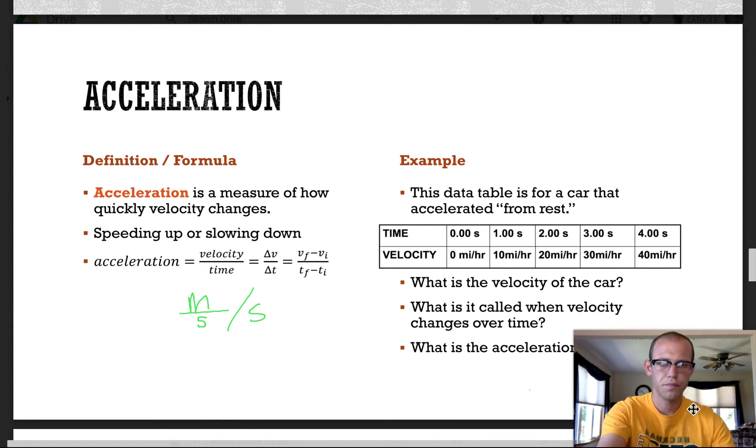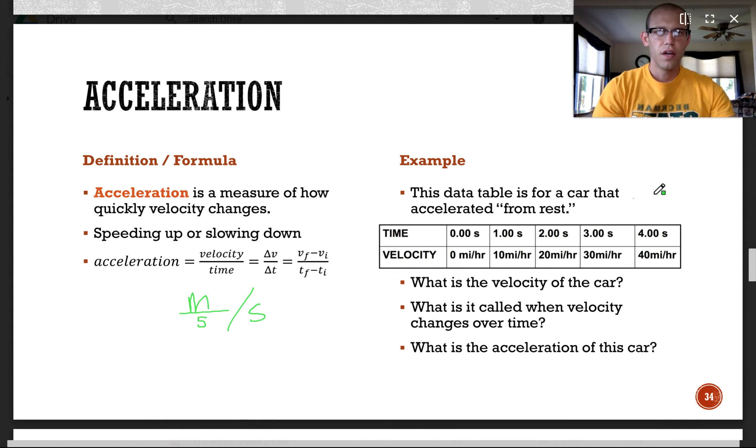So first, the data table below is for a car that accelerated from rest. So what is the velocity of the car? So the velocity I see at time one is 10 miles an hour. At time two seconds, it's 20 miles an hour. So what is the velocity of a car? That's kind of a trick question.